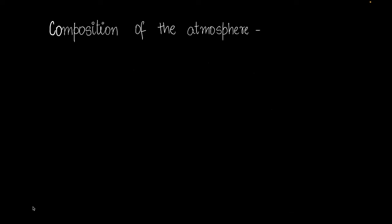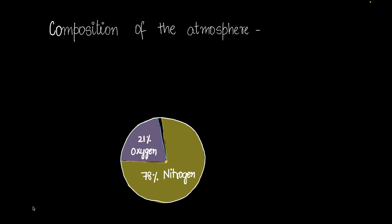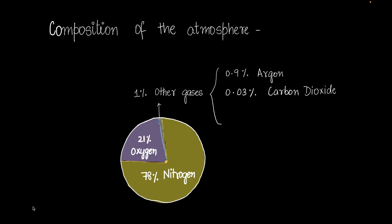What is the atmosphere made up of? Turns out that 78% of the atmosphere is nitrogen, 21% is oxygen, and 1% is other gases. That 1% is further split into 0.9% argon, 0.03% carbon dioxide, and 0.07% of other gases.